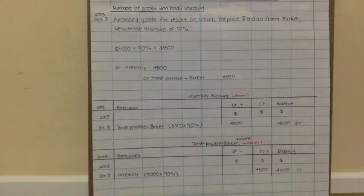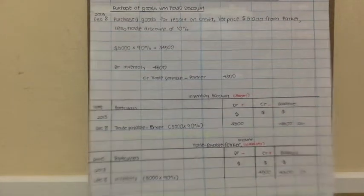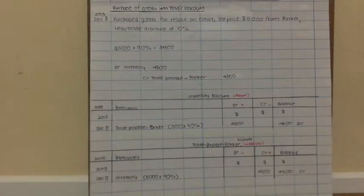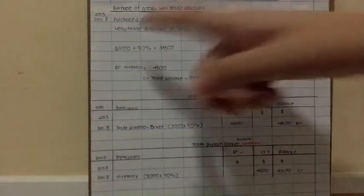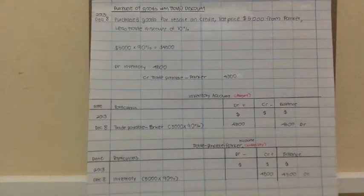Basically for returns and discounts there are two types of transactions: one is the purchase and one is sales. So first we look at the purchase. If they purchase goods with trade discount...